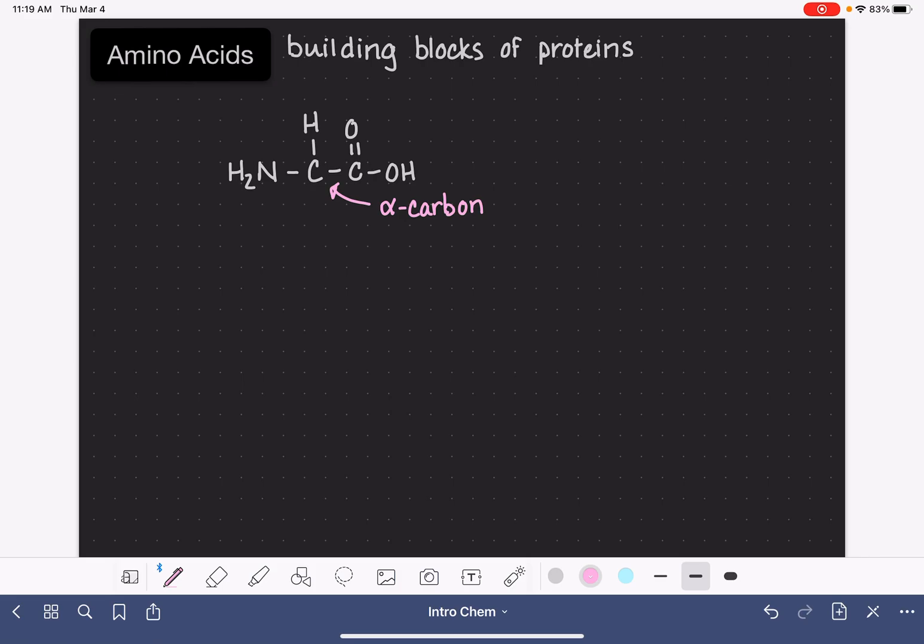The alpha carbon has one more thing attached to it. And this fourth thing attached varies from one amino acid to another. So I'm just going to use the letter R as an abbreviation for this, whatever this thing might be. And we'll just make a note here that this R group varies from one amino acid to another. And this is what gives the amino acid its identity.